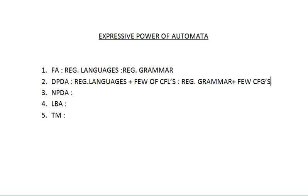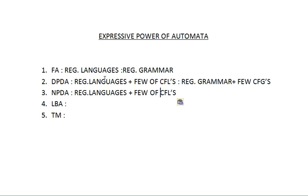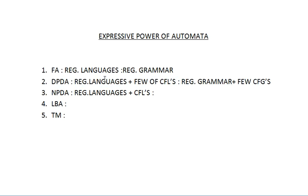Units 1 and 2 cover only finite automata; Unit 3 covers grammar; Unit 4 covers pushdown automata; Unit 5 covers Turing machines. NPDA accepts all regular languages and all context-free languages (CFLs), along with all regular grammars and all context-free grammars. So NPDA is more powerful than DPDA.